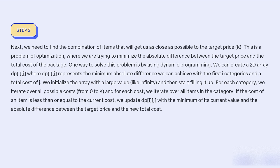We initialise the array with a large value like infinity, and then start filling it up. For each category, we iterate over all possible costs from 0 to K, and for each cost, we iterate over all items in the category. If the cost of an item is less than or equal to the current cost, we update dp[i][j] with the minimum of its current value and the absolute difference between the target price and the new total cost.